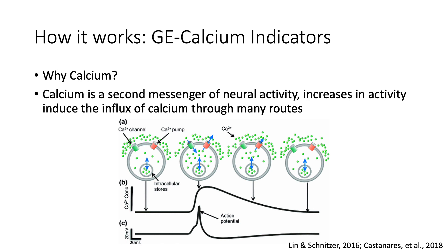Let's begin our discussion by first clarifying why calcium. Calcium is a second messenger of neural activity. Increases in activity induce the influx of calcium through many different routes. As you can see in the image below, under resting conditions, the cytoplasmic concentration of calcium is relatively low. In response to an increase in activity, such as an action potential firing, depolarization of the cell membrane results in the opening of voltage-gated calcium channels. This causes an increase in intracellular calcium that is slowly cleared out of the cell. Thus, intracellular calcium can be used as a proxy for a given neuron's activity.